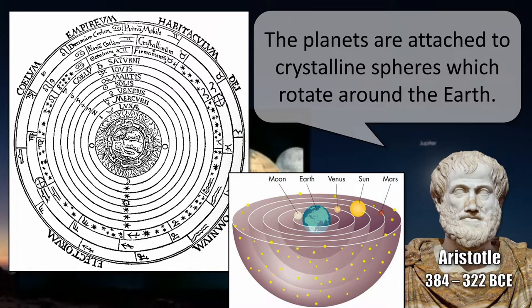Aristotle imagined that everything that moves has to have a force making it move — that was his concept of violent versus natural motion. He needed something to explain the motion of the planets wandering across the sky. So he created the idea of crystalline spheres as the driver of planetary motion. The spheres are transparent — we can't see them — which is why Aristotle chose crystalline rather than rock or wood.